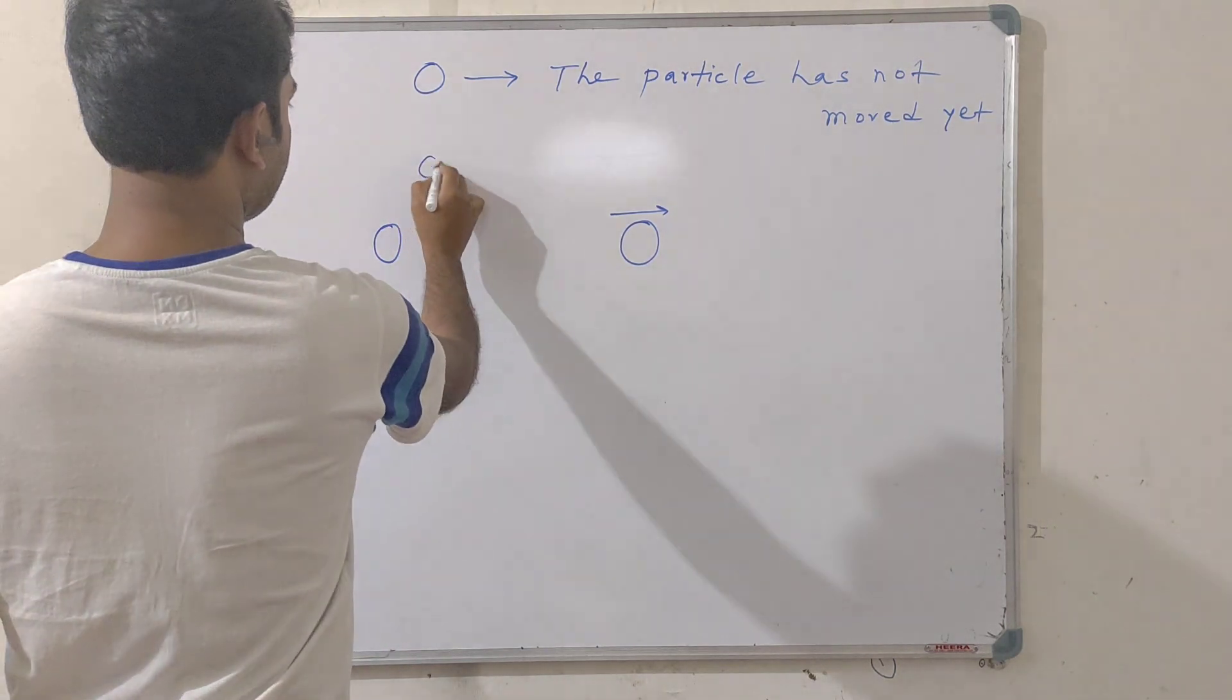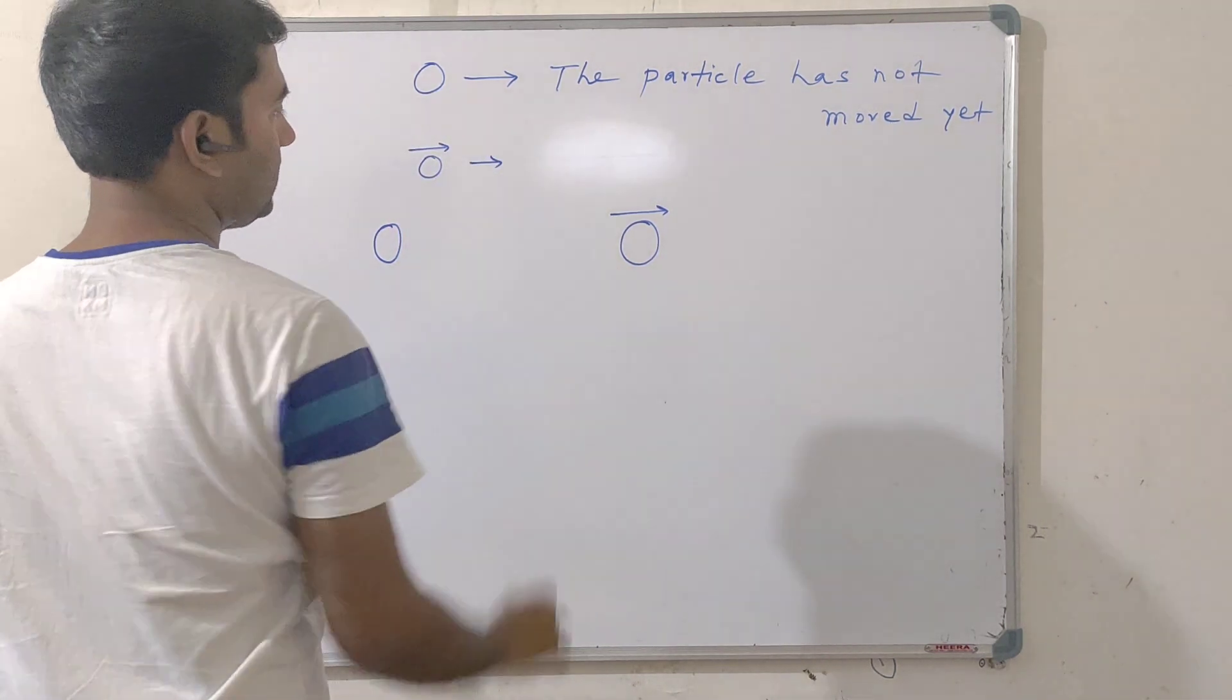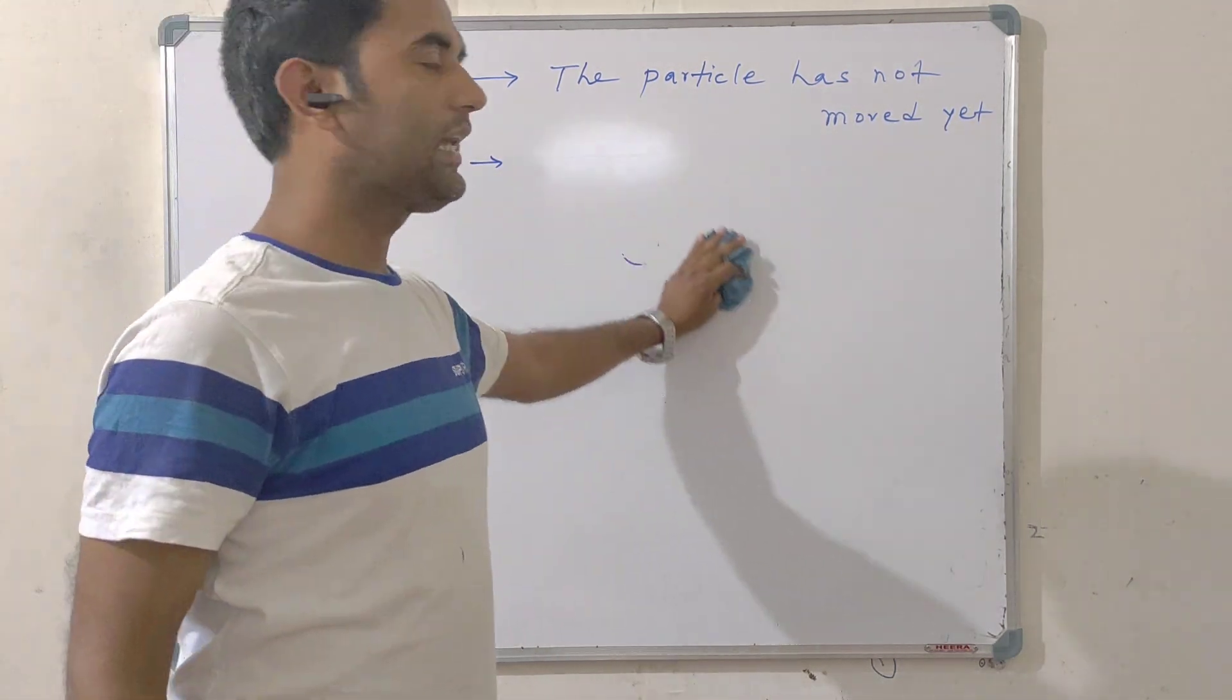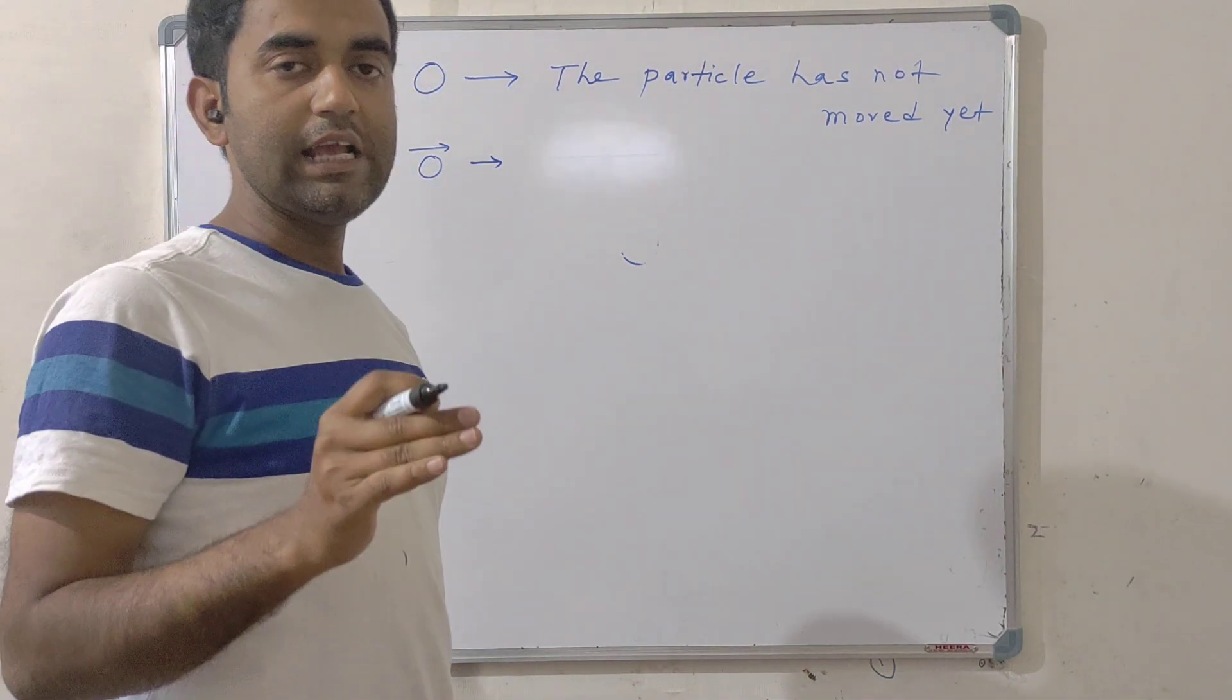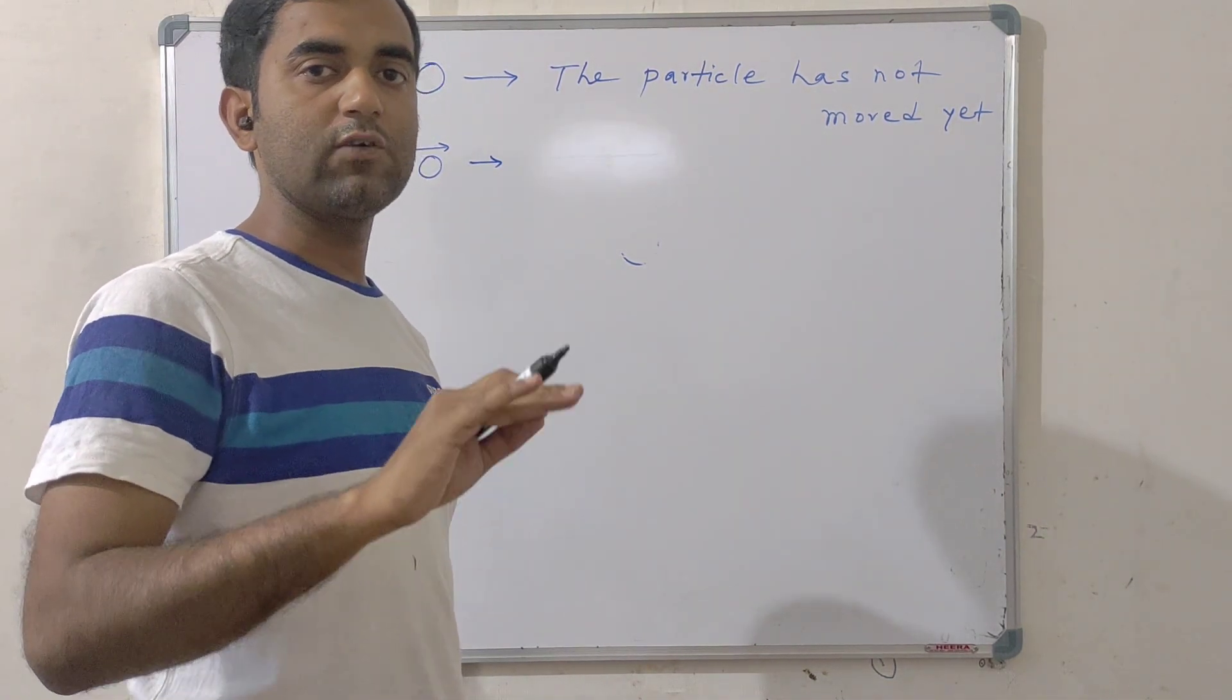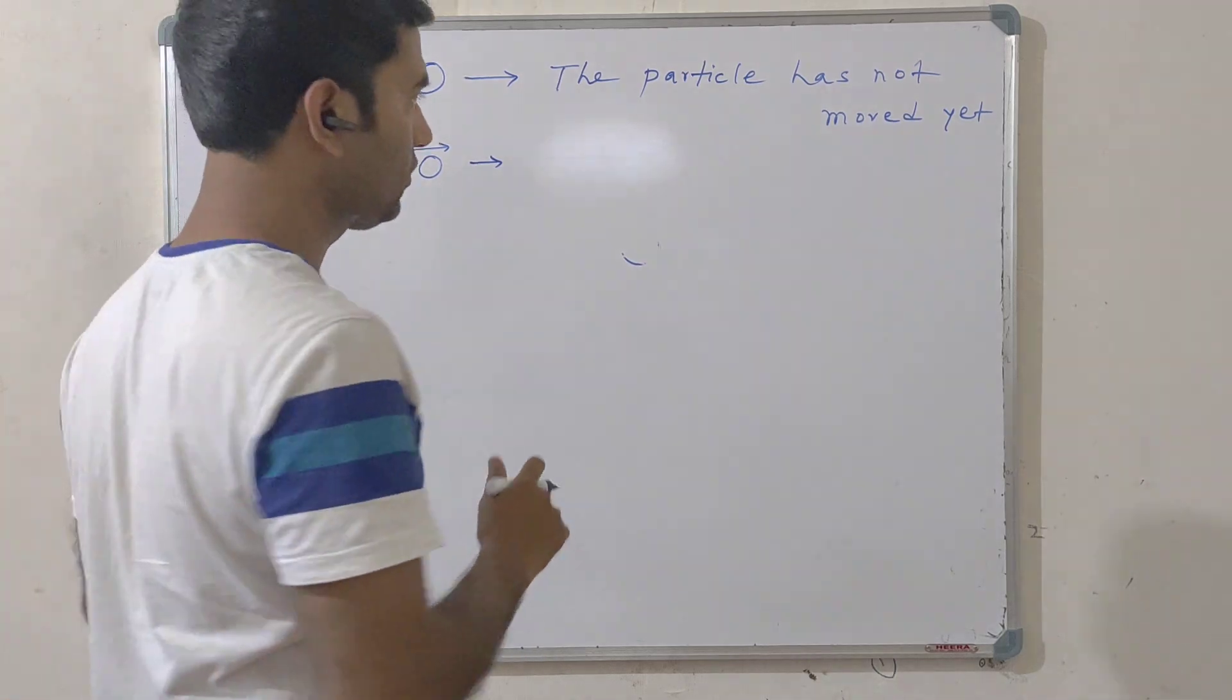Now, zero vector. This is the case that the particle has moved but its initial and final points are coinciding.